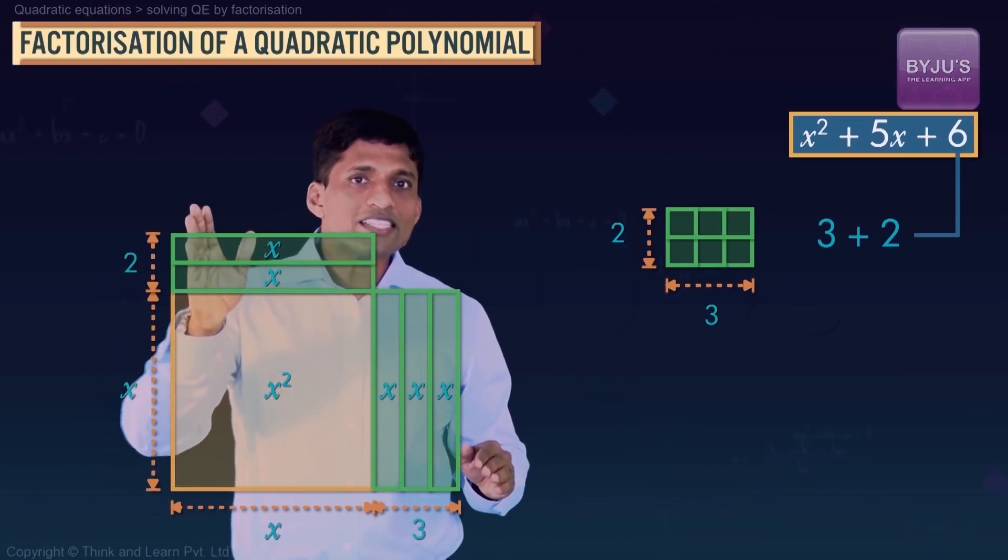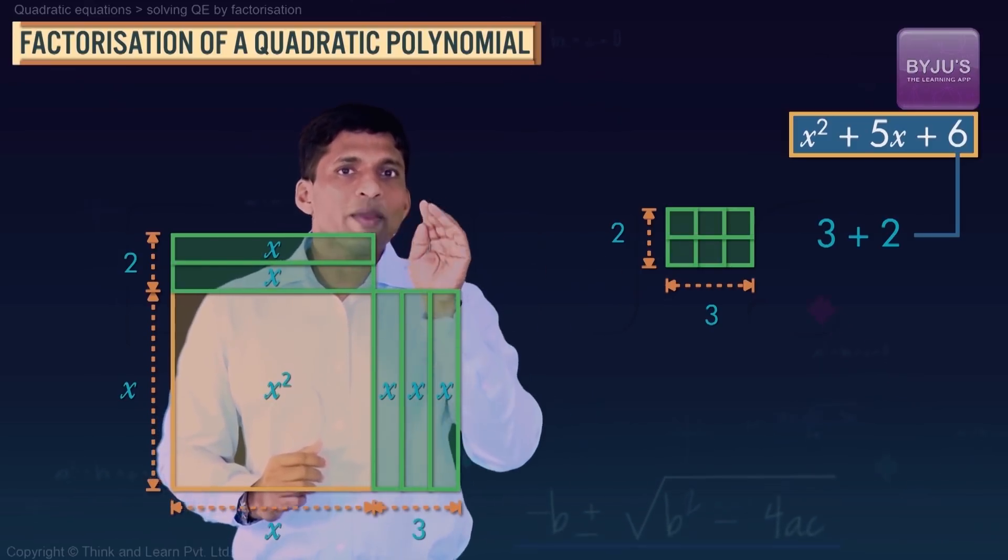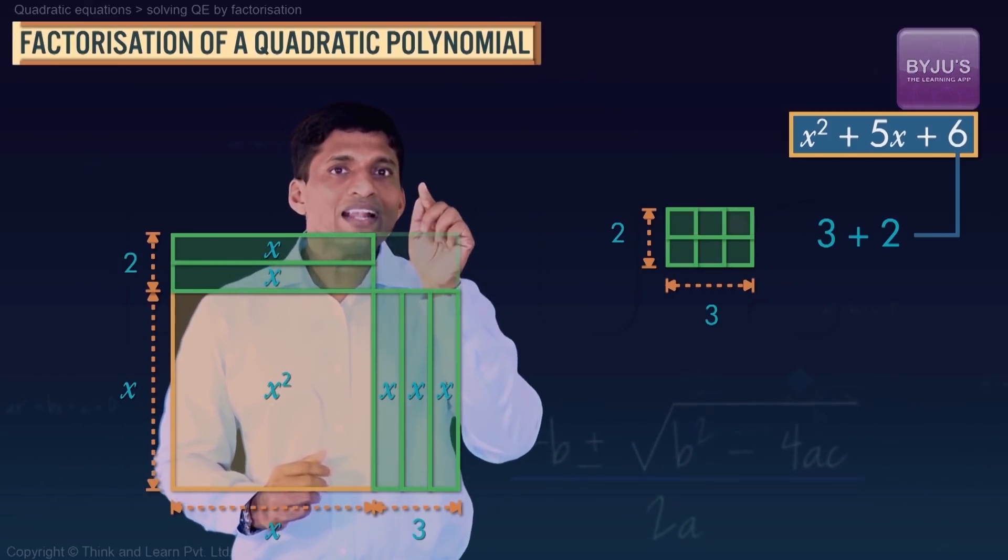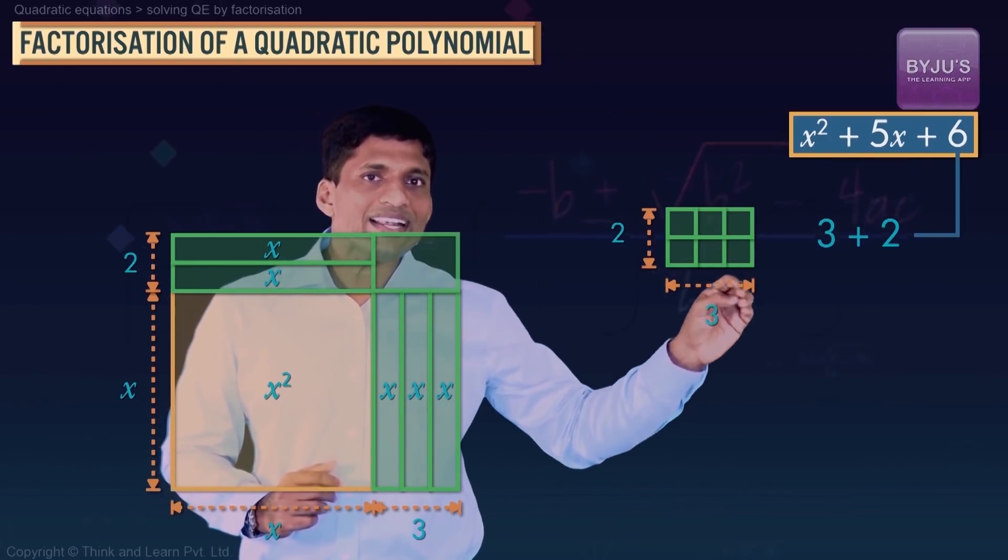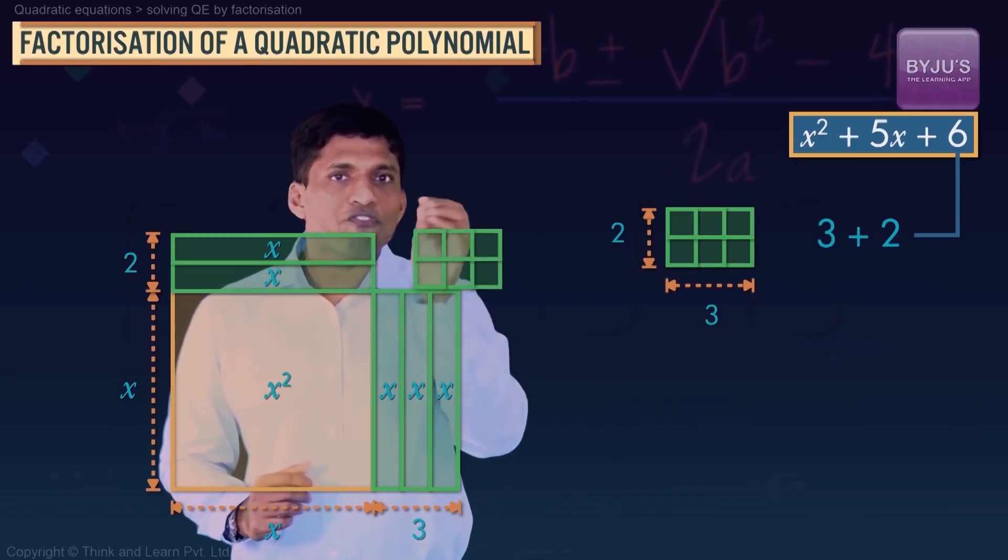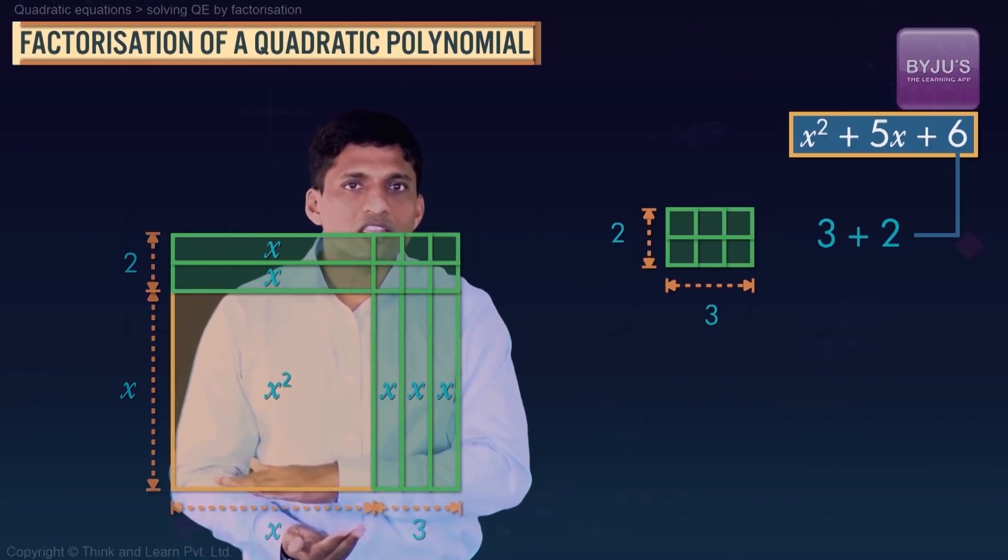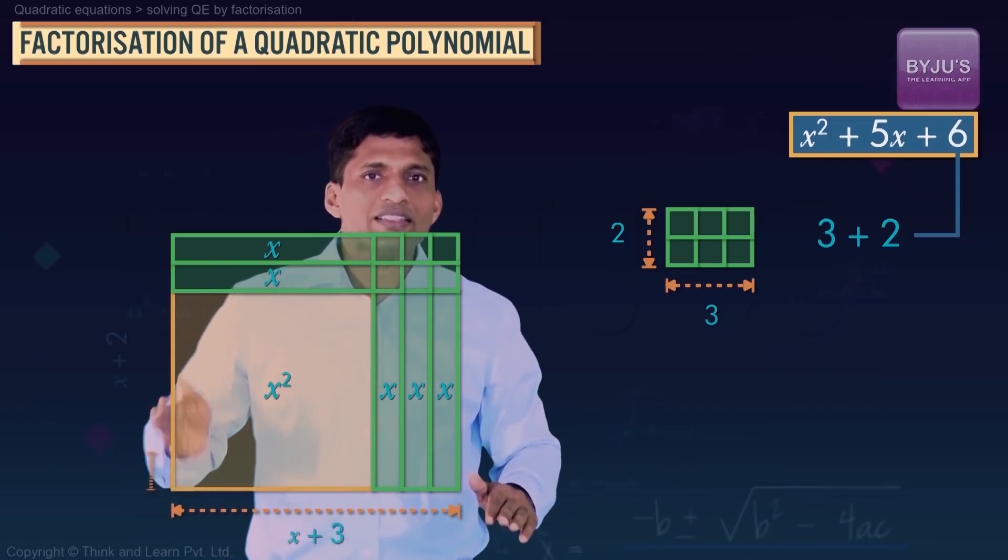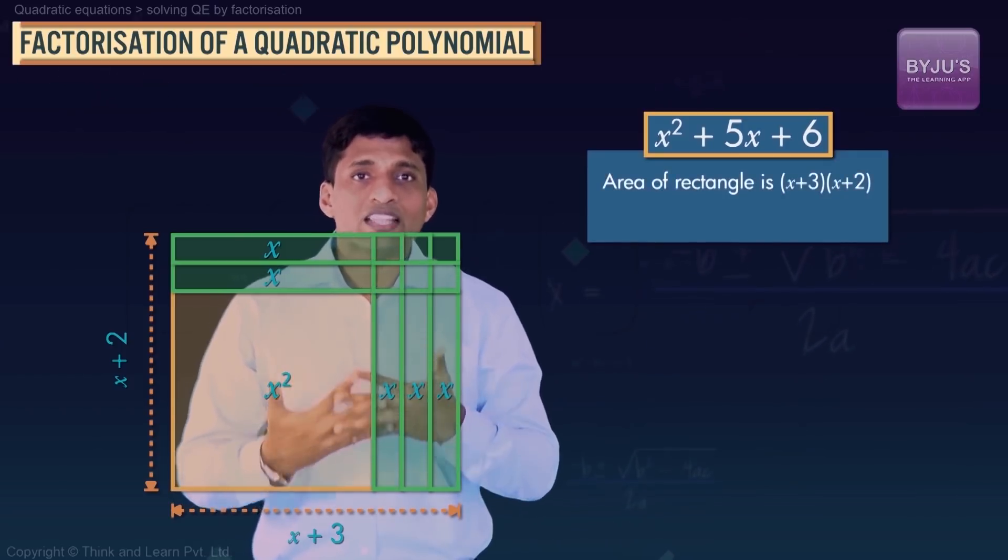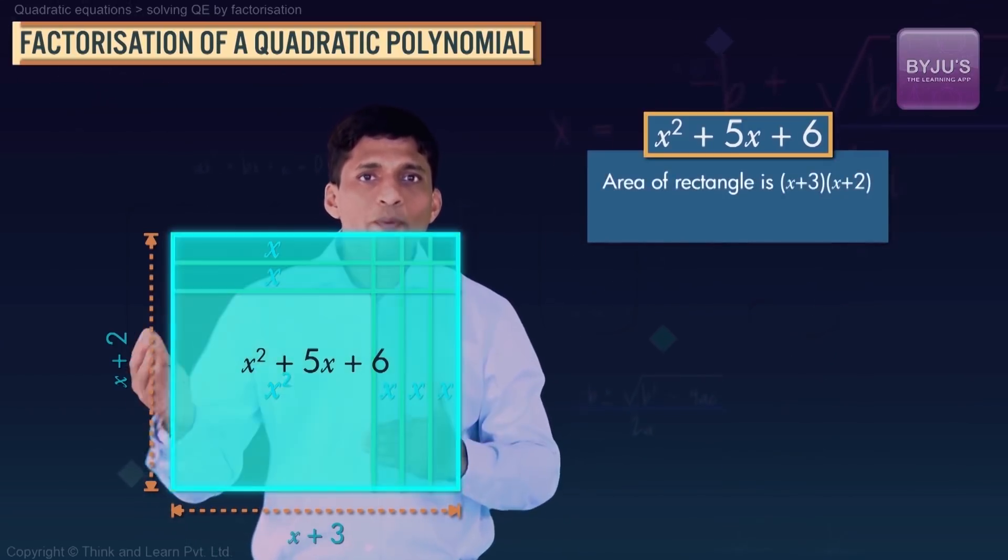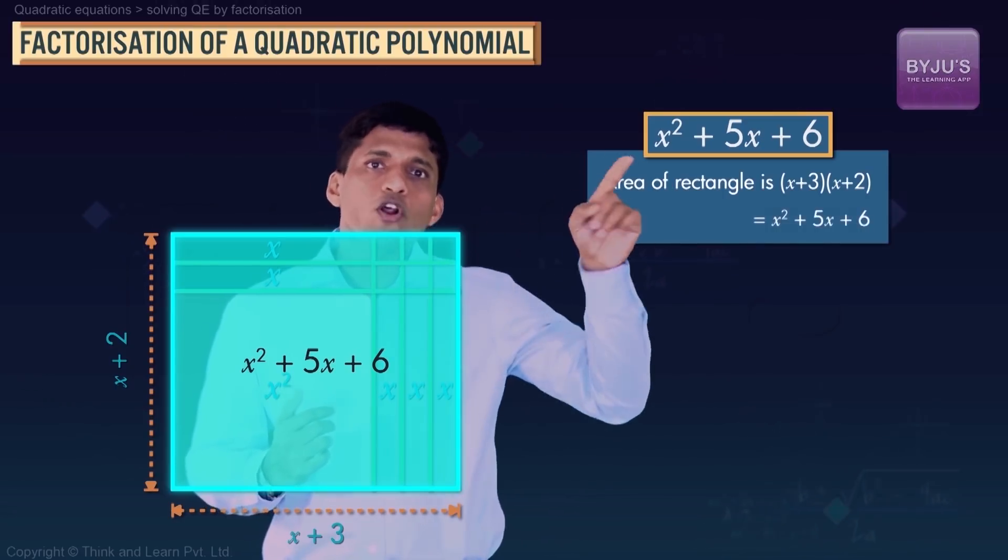Now this rectangle will get completed. What is the remaining region here? That rectangle has length 3 and breadth 2. So I can directly take this 3 by 2 rectangle and fill it here. So it's a complete rectangle now with length x + 3 and breadth x + 2. So area of this rectangle is, if I take length into breadth, x² + 5x + 6, which is our original expression.